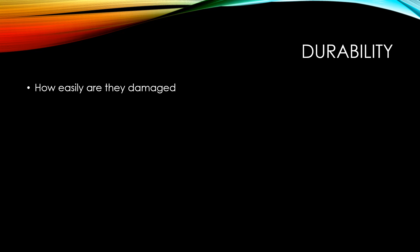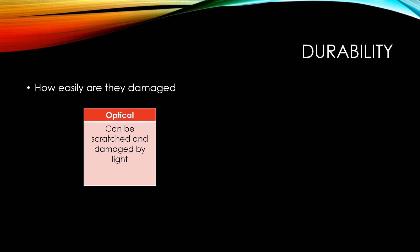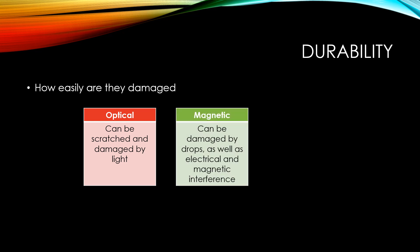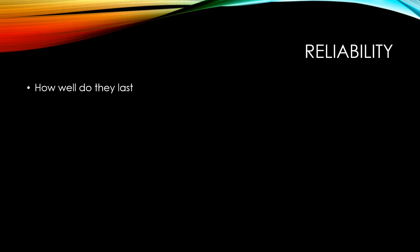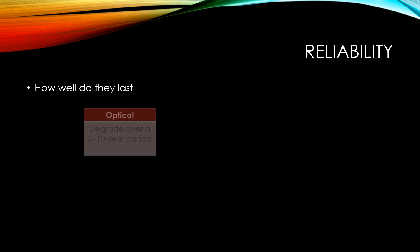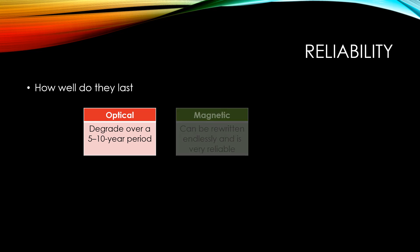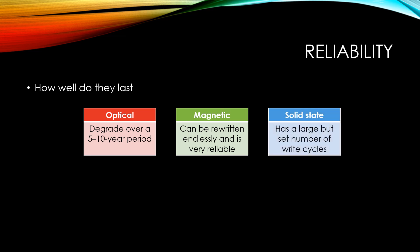Durability refers to how easily a storage medium can be damaged. Optical storage is easily damaged by scratches and by light. Magnetic storage can be damaged if dropped, as well as by electrical and magnetic interference. Solid state storage is very durable due to having no moving parts and very difficult to damage. Reliability refers to how well a storage medium will last over time. Optical storage lasts quite well but will degrade over a 5 to 10 year period. Magnetic storage can be rewritten endlessly and is very reliable. Solid state storage has a large but set number of write cycles.